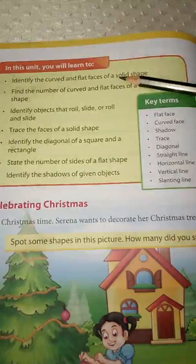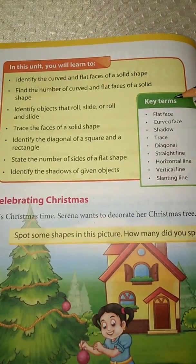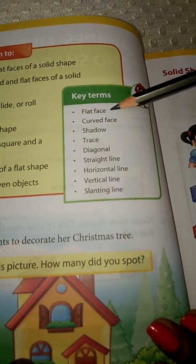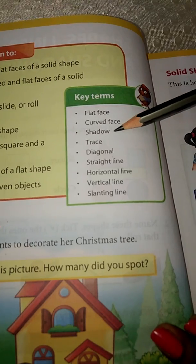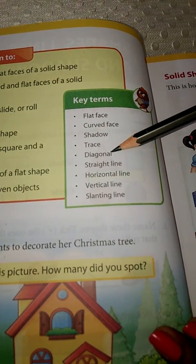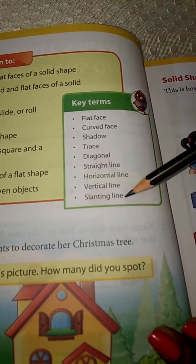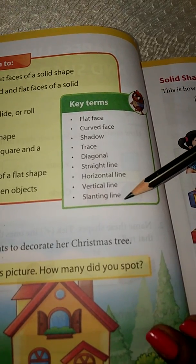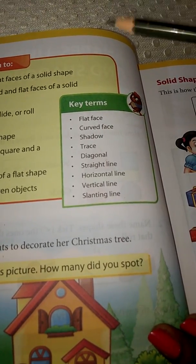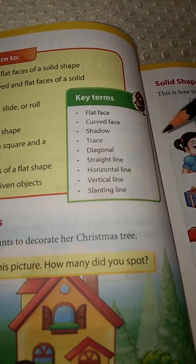Turn the page. Children, these are the things which you are going to learn in this topic, and these are the key terms: flat face, curved face, shadow, stress, diagonal, straight line, horizontal line, vertical line, and slanting line. So these are all key terms we are going to learn.